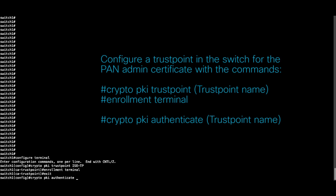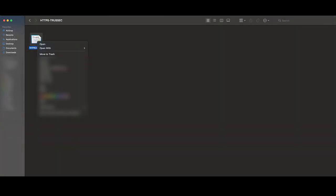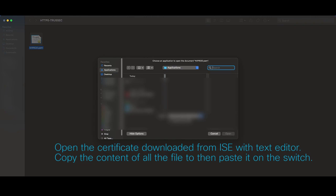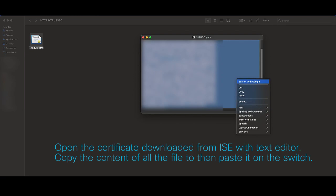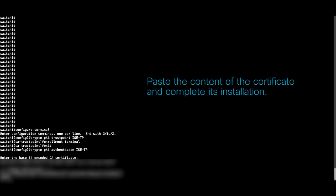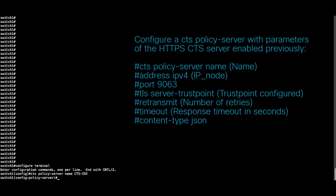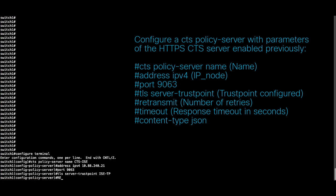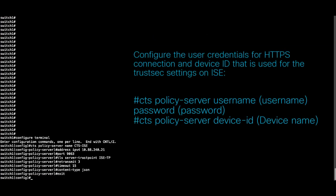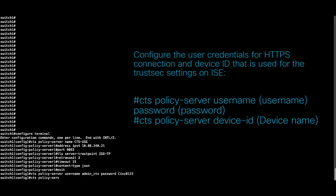Issue the command displayed on the switch to import the certificate. The following point is to configure the parameters for the PSN node you configured earlier, as you can see in this console. Finally, configure the parameters displayed on the screen that link the switch with the commands displayed on ISE to download the environment data and policies.